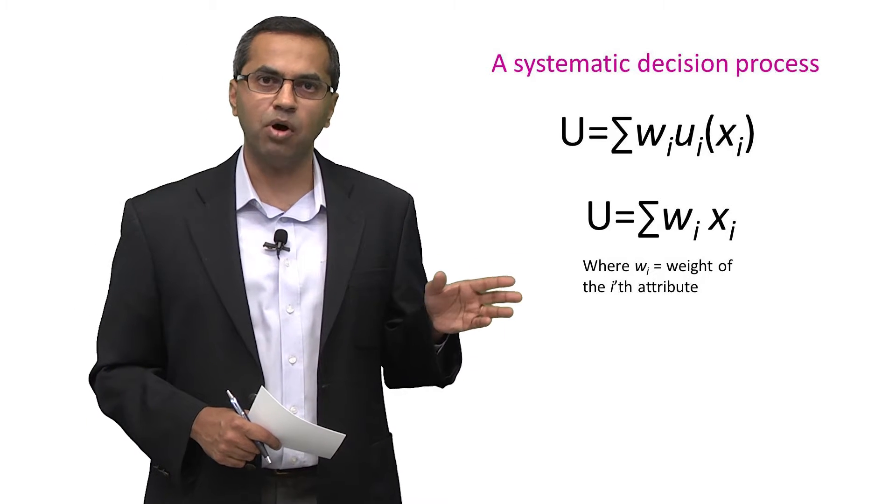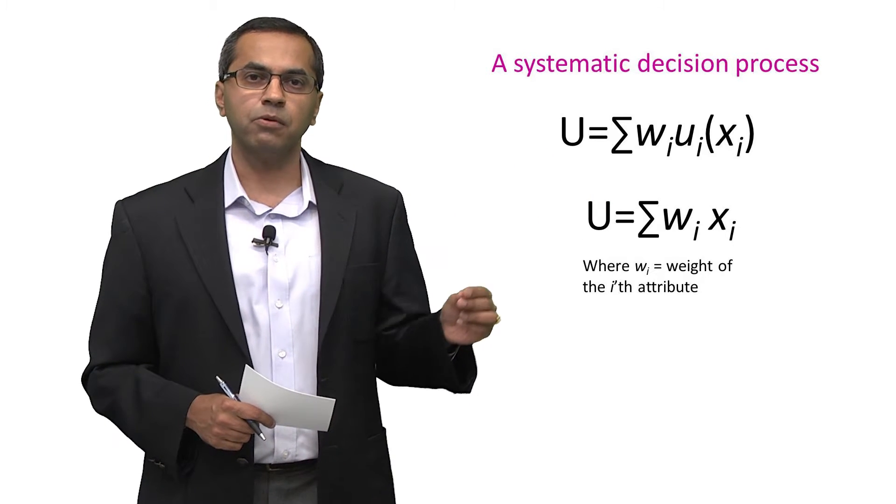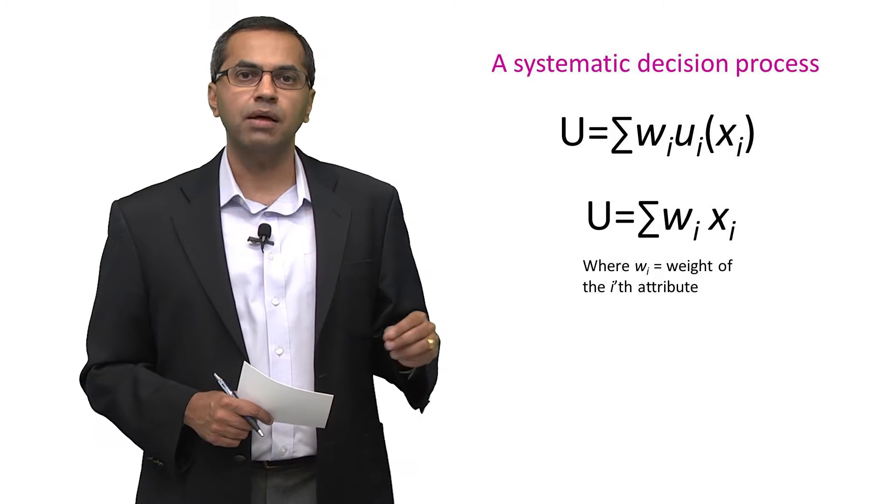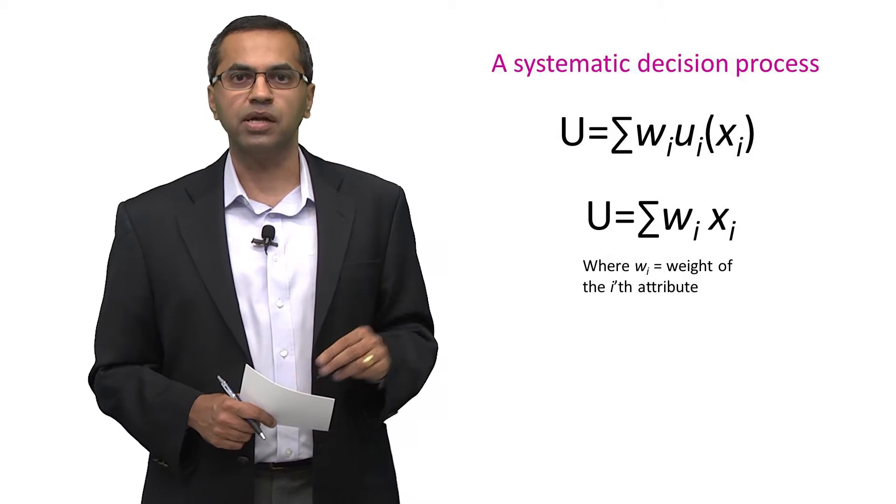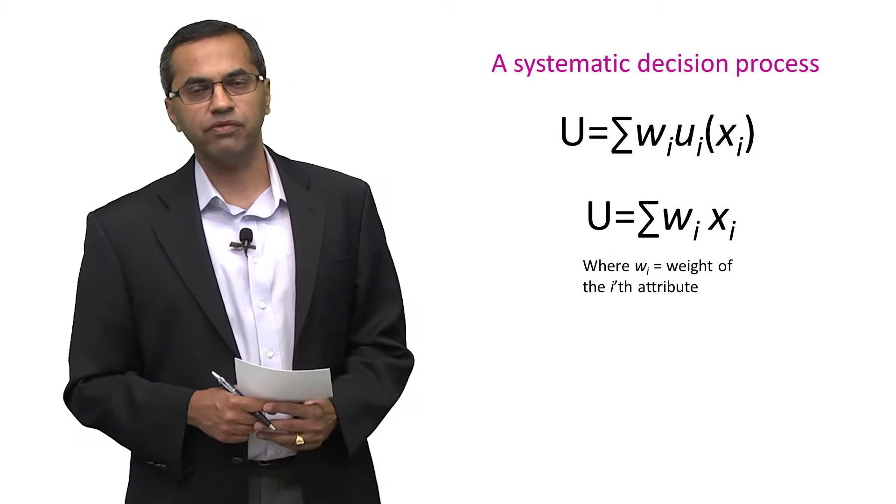A simpler version of that same model is the second equation you see in this chart, where you simply multiply the weighting of a given attribute by the value of that attribute, w_i multiplied by x_i, and add that up across all of the attributes.